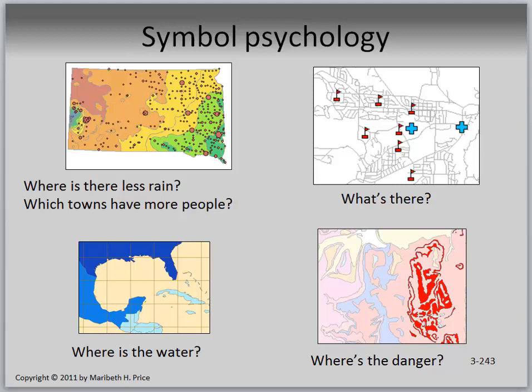Here are some symbol psychology examples from the book. In the top left: where is there less rain — what does that map tell you, and which towns have more people? On the right: blue hospital symbols and red symbols with a flag suggest hospitals and schools. On the bottom left: where is the water — what is the first thing you think of when you look at that map, and could it be made better? On the bottom right: where is the danger — what initially pops into your head? You should realize these associations happen without you even thinking about it.